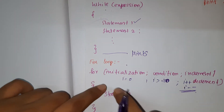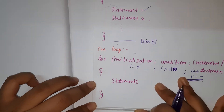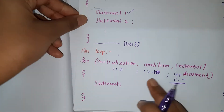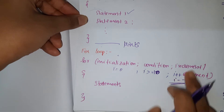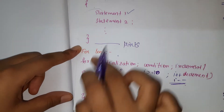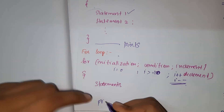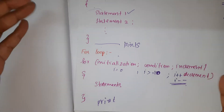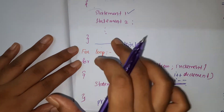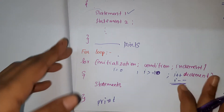It checks one by one: first i equals zero, it enters the loop, checks the condition, if true it comes out and prints the value. Then it goes back, increments or decrements the value based on the given condition, comes back to check again, and prints the value. So a for loop is very easy and simple to write — unlike if-else, you don't have to write so many conditions. In a single line you can handle it.